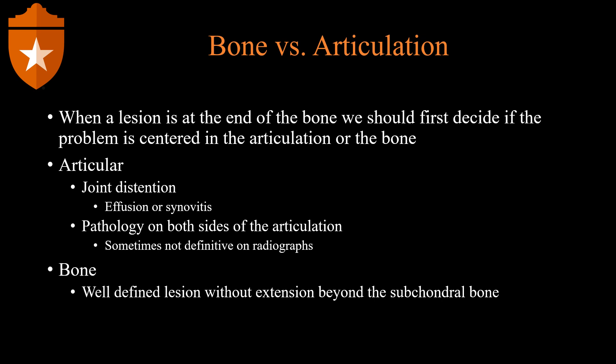In terms of a process originating from the articulation or the end of the bone, there are some things we need to look at on radiograph, CT, or MRI. Every time we see a lesion close to the end of the bone, we should always try to figure out if the lesion is originating from the bone or from the articulation extending to the bone. Articular processes will have joint distension with an effusion, hemarthrosis, or synovitis. The pathology will be on both sides of the articulation, affecting the subchondral plate and causing destruction of the bone immediately adjacent to the articulation.